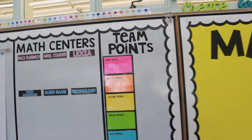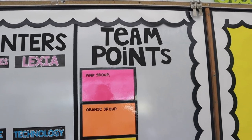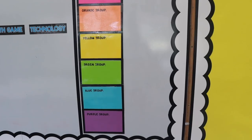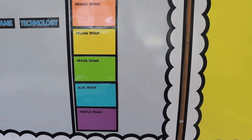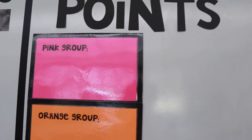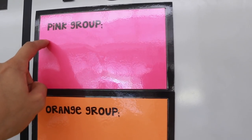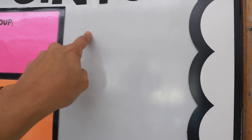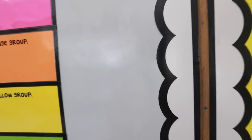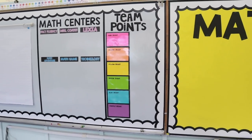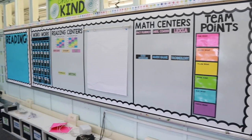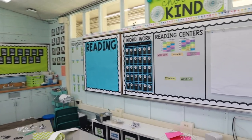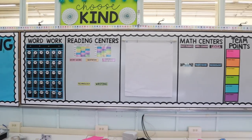This is the last section — team points. I've talked about my team points before. This year I'm doing color groups and we are doing money. So if the pink group earns a quarter, I will come up and write 25 cents, and then at the end of the week we will total up all the money and the winning team wins for the week. This whole board is finished.